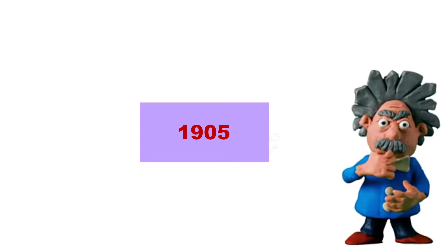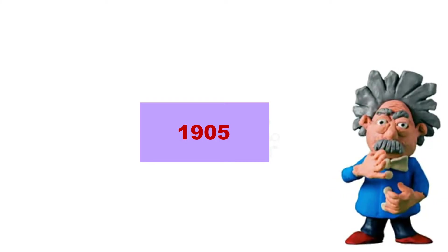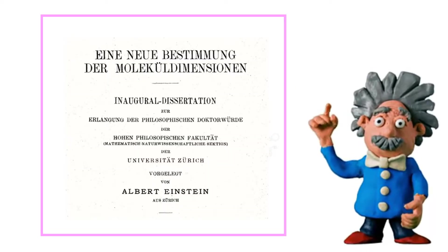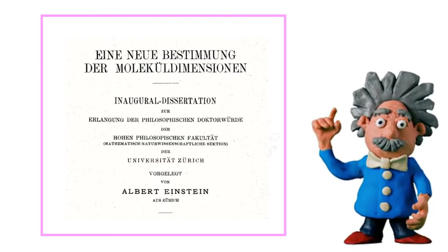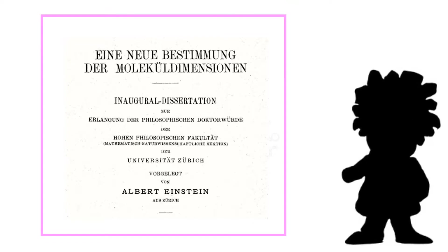In 1905 a man named Albert Einstein came up with his very own idea and published it as a research paper where he provided the physical reason and mathematical analysis of Brownian motion.